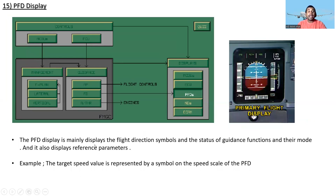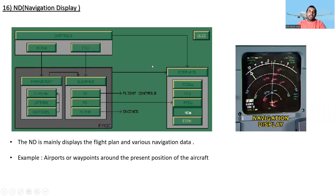The Primary Flight Display mainly displays the flight director symbols and the status of guidance functions and their modes. It also displays reference parameters — for example, the target speed value is represented by a symbol on the speed scale of the PFD.